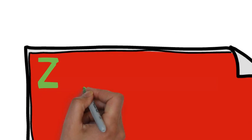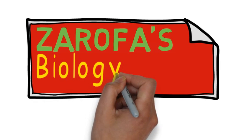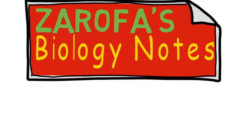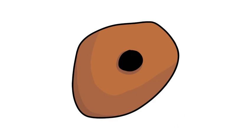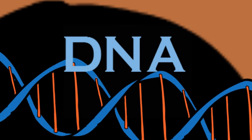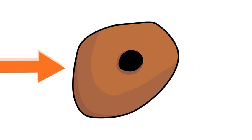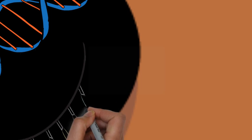Welcome to Zorofa's biology notes. This video is about post-transcriptional control of gene expression. In the cell there is a nucleus that contains the DNA strand. This DNA strand contains genetic information and this information is passed on to the messenger RNA by a process called transcription.